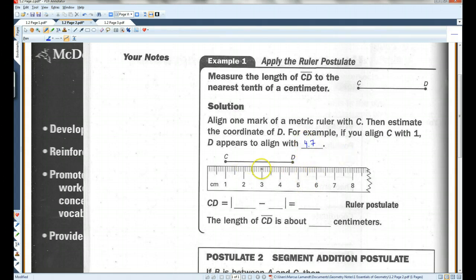So the difference, the distance between them, would be 4.7 minus 1, which is about 3.7. So the length of CD is about 3.7 centimeters.